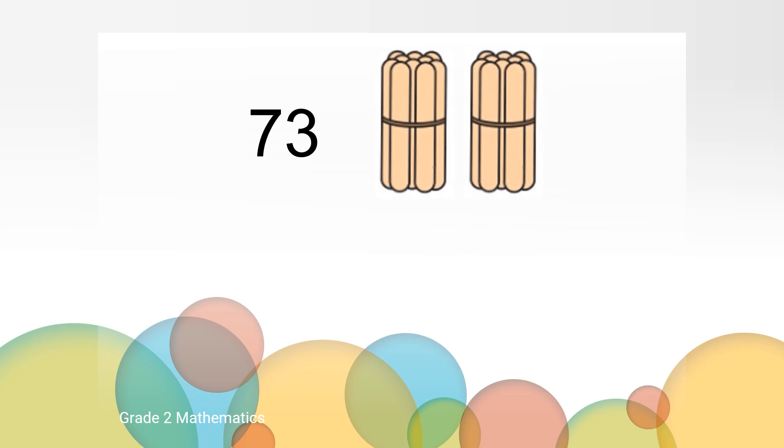What number do you see? 73. We will start with 73 and add two bundles. How many do we have now? 93. How did you think about it? Maybe you counted 73, 83, 93, or maybe you knew seven tens and two tens is nine tens or 90, and then there were already three ones. The ones place didn't change.